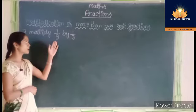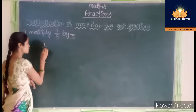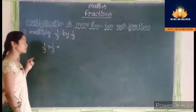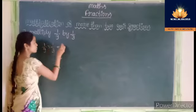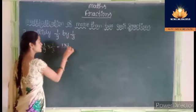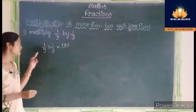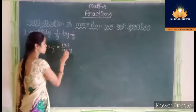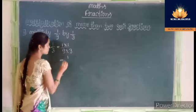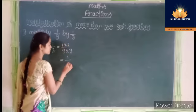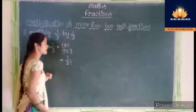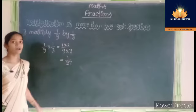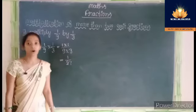Multiply 1 upon 9 by 1 upon 3, that is 1 by 9 into 1 by 3. First multiply the numerators: 1 into 1 equals 1. Then multiply the denominators: 9 into 3 equals 27. When we multiply 1 by 9 and 1 by 3, we get 1 by 27 as a product.